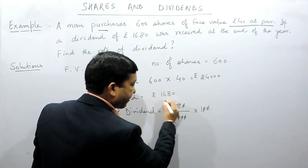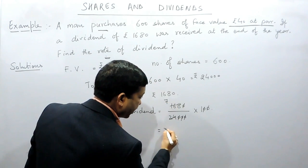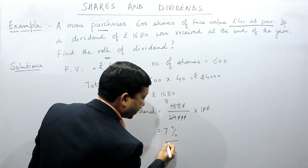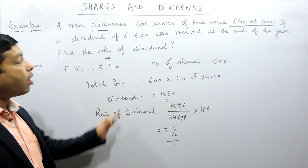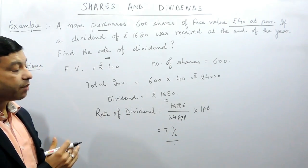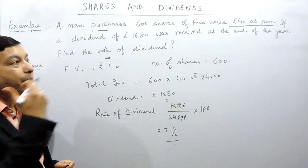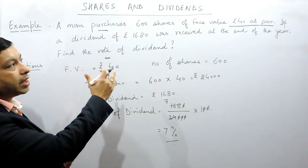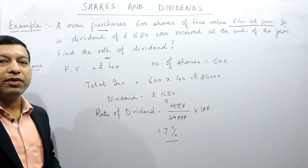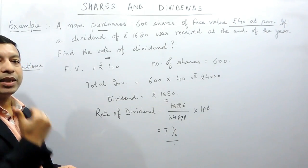24, 7 to 168, so it is basically 7 percent dividend. Now we have calculated this 7 percent dividend from the company point of view, because there is no market value given here, so we cannot calculate the dividend from the shareholders point of view.